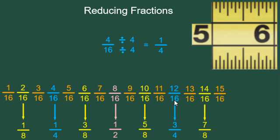12 sixteenths works the same way. The top and bottom have a greatest common factor of 4, so you end up with a fraction with 4 as the denominator. 12 sixteenths is equal to 3 quarters of an inch.